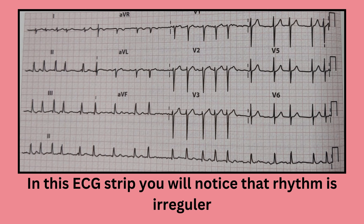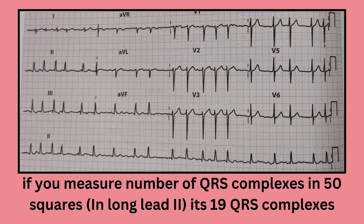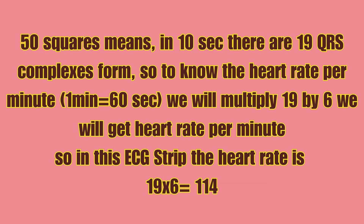In this ECG strip, you will notice the rhythm is irregular. In the long lead, if you measure the number of QRS complexes in 50 squares, it's 19 QRS complexes. These 19 QRS complexes are formed in 10 seconds. To calculate it for 60 seconds, i.e. 1 minute, we multiply by 6. Therefore 19 × 6 equals 114 per minute, which is the heart rate in this ECG strip.